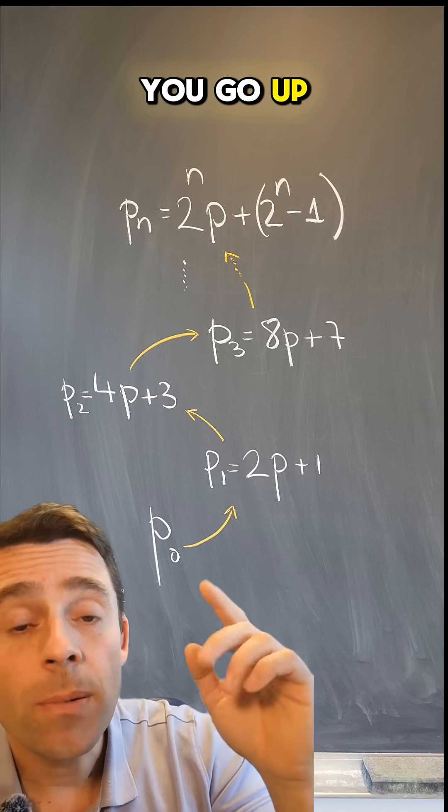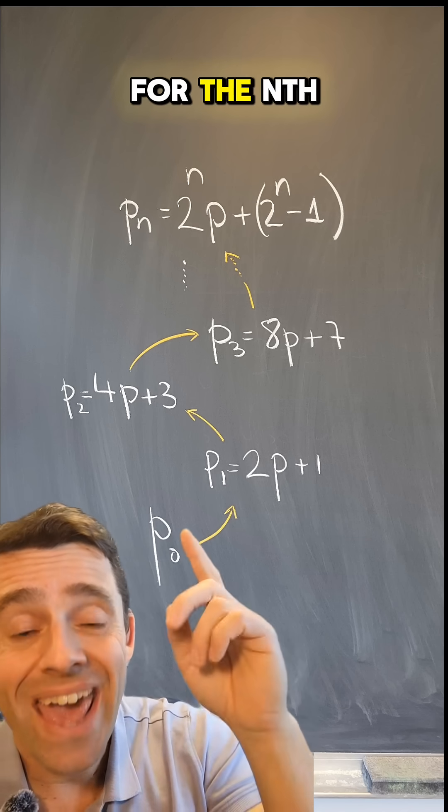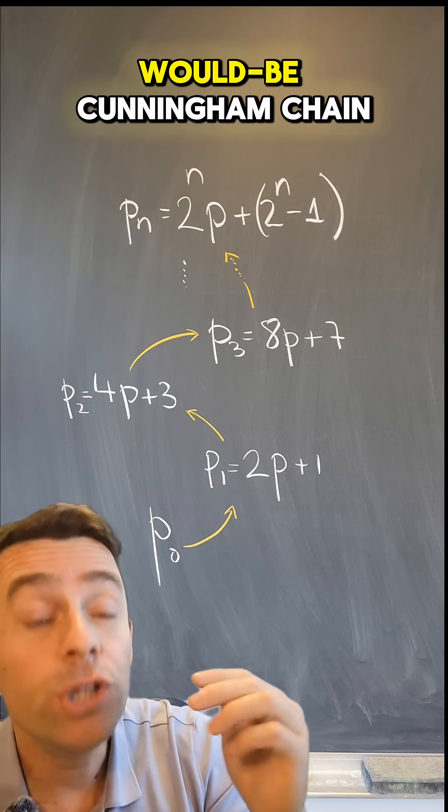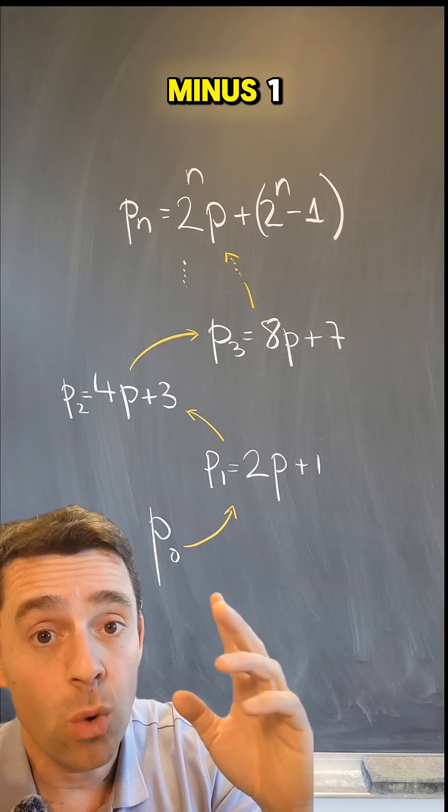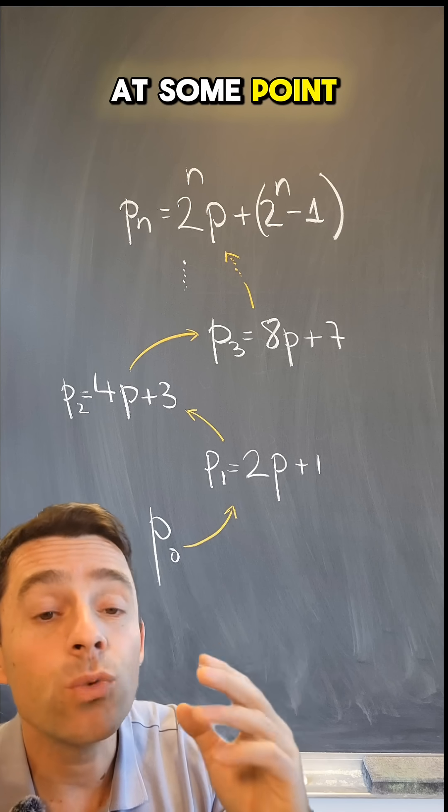As you go up, the general formula for the nth prime in a would-be Cunningham chain is of the form 2 to the n times p plus 2 to the n minus 1. And that number at some point will be composite.